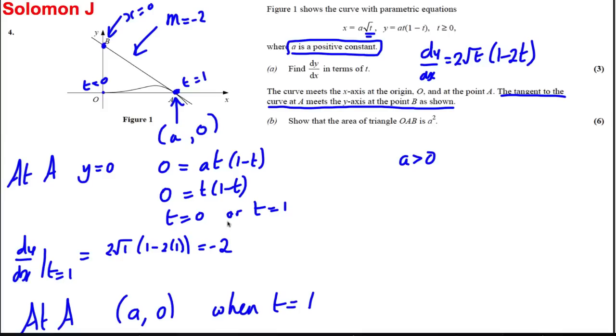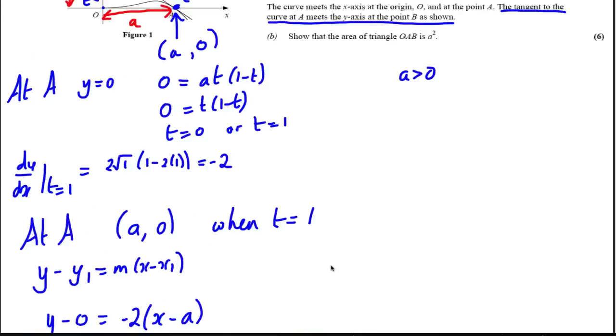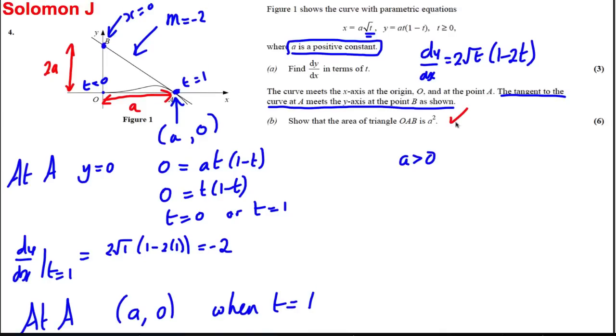Therefore this triangle, if we're trying to work out the area, has height 2a and width a. So the area of the triangle is (1/2) × base × height, which is (1/2) × a × 2a, which is clearly a², and that's exactly what we need. We're done.